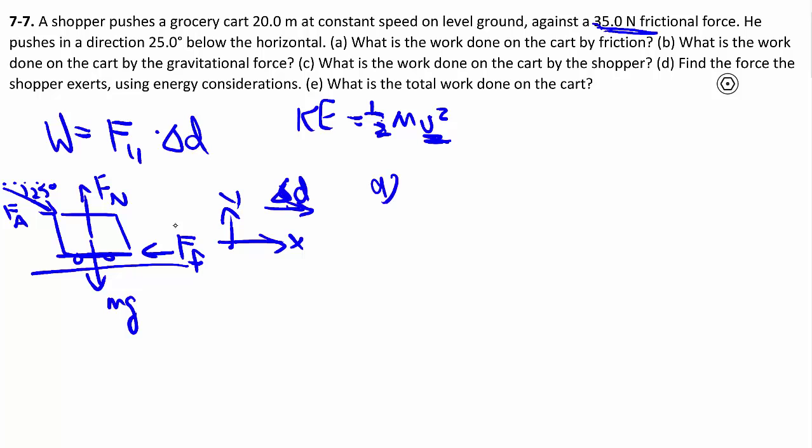Let's do them one at a time. Work done on the cart by friction. Here we're talking about the friction force, the parallel part. Friction force goes that way, displacement goes that way. They are parallel, but more specifically anti-parallel - they point in opposite directions. So we have negative 35 N times 20 meters, giving us negative 700 J.